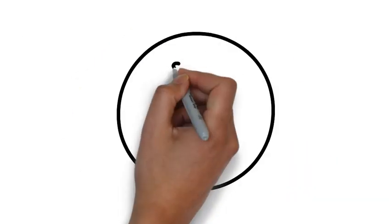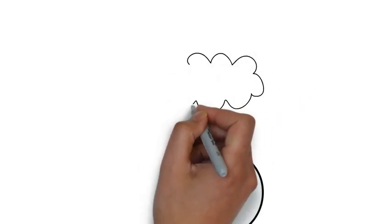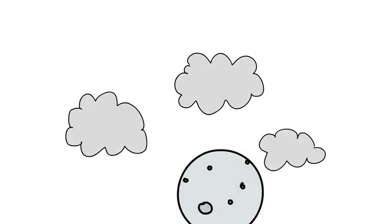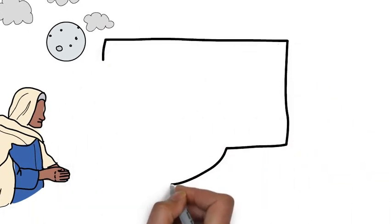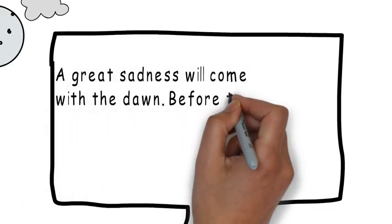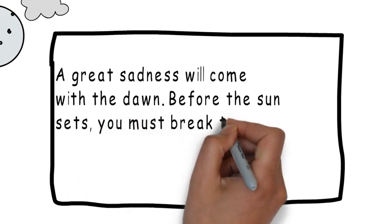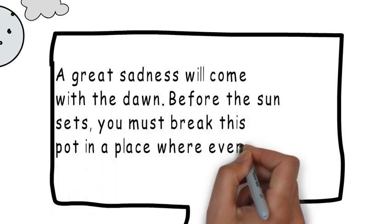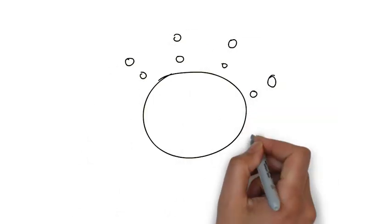One night, as she was about to fall asleep, she called her only servant and told him this. A great sadness would come within the dawn. Before the sunset, we must bring this pot to a place where everyone will see.